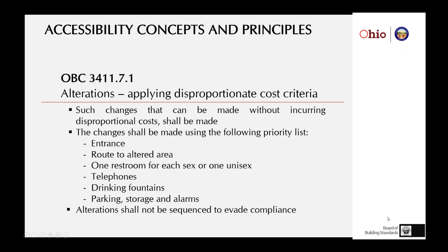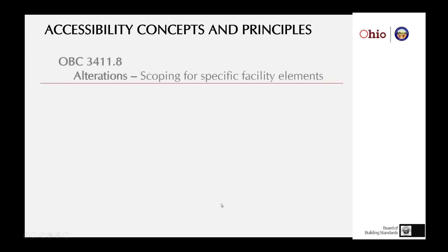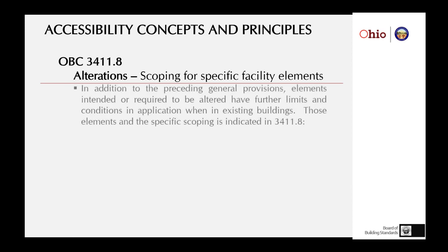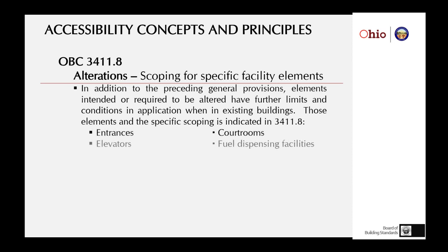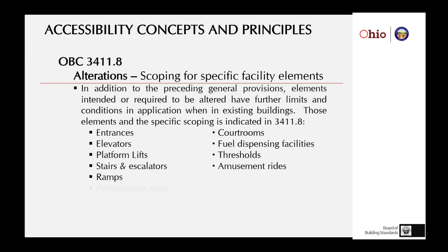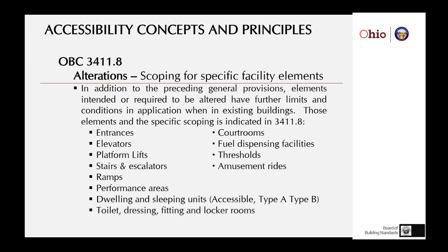The scoping for specific facilities and elements — there are about 15 items that have unique scoping requirements giving more specific information. In Section 3411, which is where the building code puts specific scoping, this includes entrances, elevators, courtrooms, and about 12 or so items in total that have specific requirements when dealing with those components.